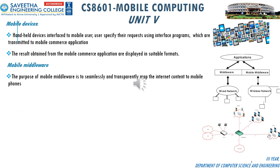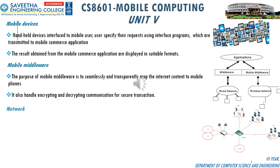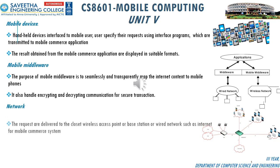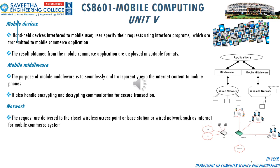The second module is mobile middleware, whose purpose is to seamlessly and transparently map internet content to mobile phones. It also handles encrypting and decrypting communication for secure transactions. The third component is the network — requests are delivered to the closest wireless access point, base station, or wired network such as the internet.